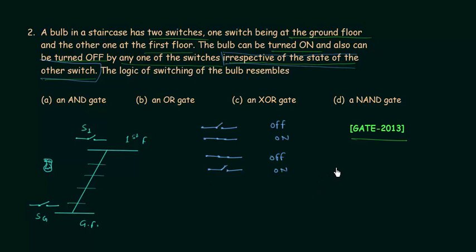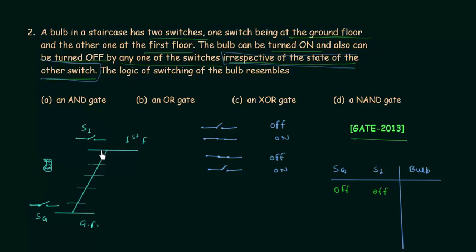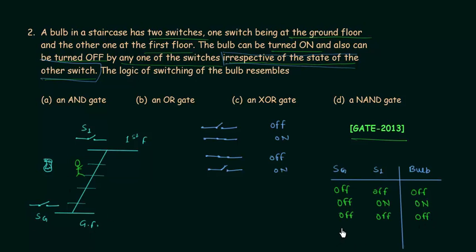Now I will make the truth table. SG is the first column, S1 is the second column, and the bulb is the output. Initially both switches are off (0,0) and the bulb is off (0). When you go to the first floor and switch on S1, SG is off and S1 is on (0,1), and this turns on the bulb (1). When you switch off S1 again, SG is off and S1 is off (0,0), and this also turns on the bulb.